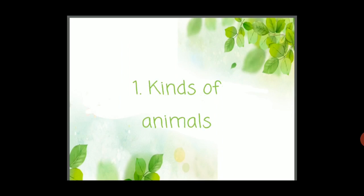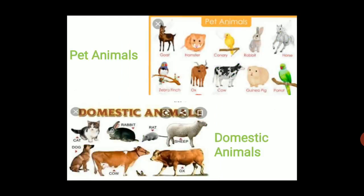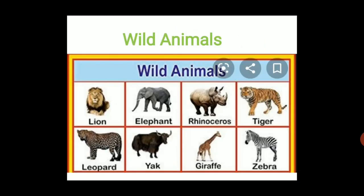Now, kinds of animals — there are basically three types. First are pet animals: those which are kept as pets in homes, like goat, parrot, and rabbit. Second are domestic animals, which are very useful to us — they provide us many things and are very beneficial. Third are wild animals, which are very dangerous and can't live with us. They live in the forest, like lion, elephant and tiger.